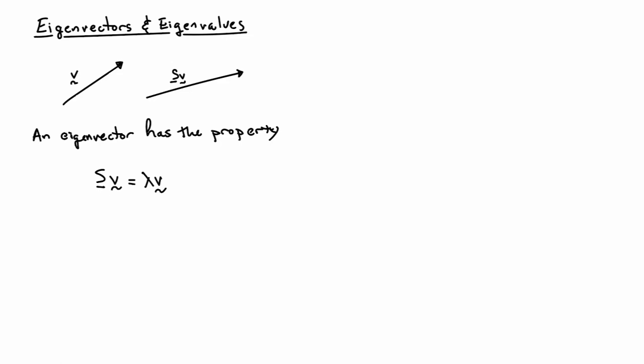They have the property that if I apply s to them, they're going to be equal to the original vector but simply rescaled. So it will be pointing in the same direction, but it will just have a length multiplied by a number lambda. Lambda is a number, v is a vector. So v is the eigenvector, and lambda is the eigenvalue. It's the eigenvalue corresponding to the eigenvector v.